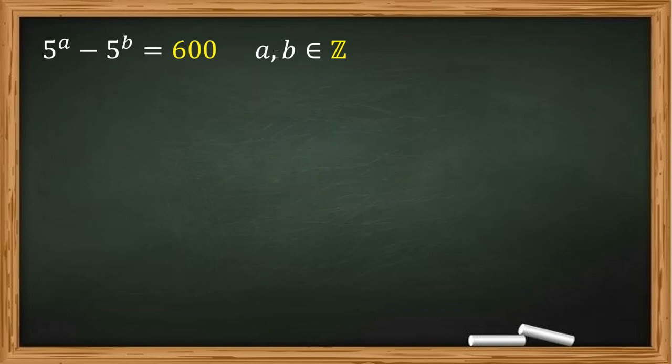5 to the A minus 5 to the B equal to 600, where A and B are integers. We want to find all possible values for A and B.